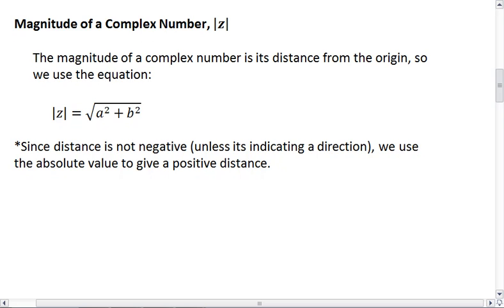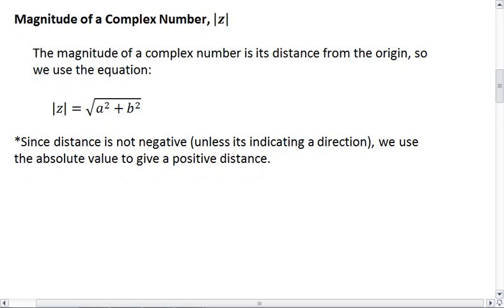We need to then talk about the magnitude of a complex number. The notation for that is the absolute values around the z. The magnitude of a complex number is its distance from the origin. So we're going to use the equation from the Pythagorean theorem, where the magnitude of the number equals the square root of a squared plus b squared. Notice since distance is not negative, unless it's indicating a direction, we use the absolute value to give a positive distance.